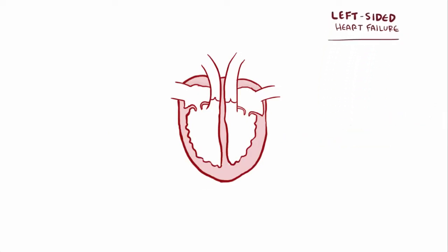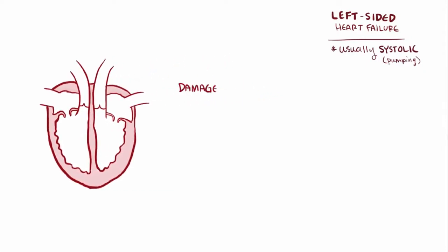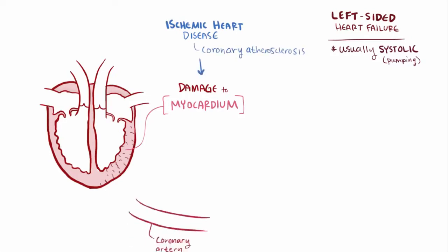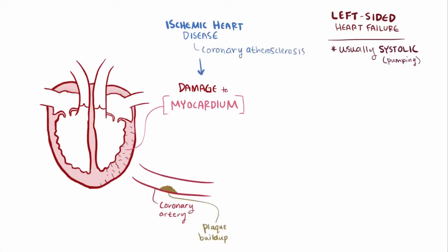Usually left-sided heart failure is caused by systolic or pumping dysfunction, typically due to some kind of damage to the myocardium, or the heart muscle, which means it can't contract as forcefully and pump blood as efficiently. Ischemic heart disease caused by coronary artery atherosclerosis or plaque buildup is the most common cause. In this case, less blood and oxygen gets through the coronary artery to the heart tissue, which damages the myocardium. Sometimes if the coronary is blocked completely and that person has a heart attack, they might be left with scar tissue that doesn't contract at all.